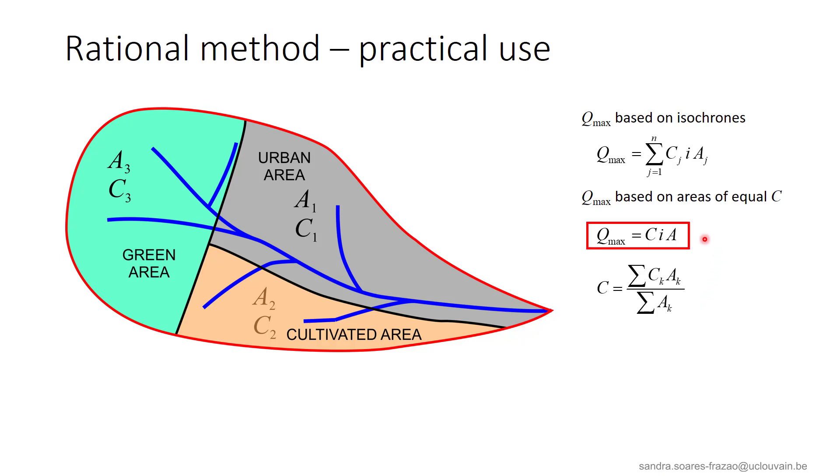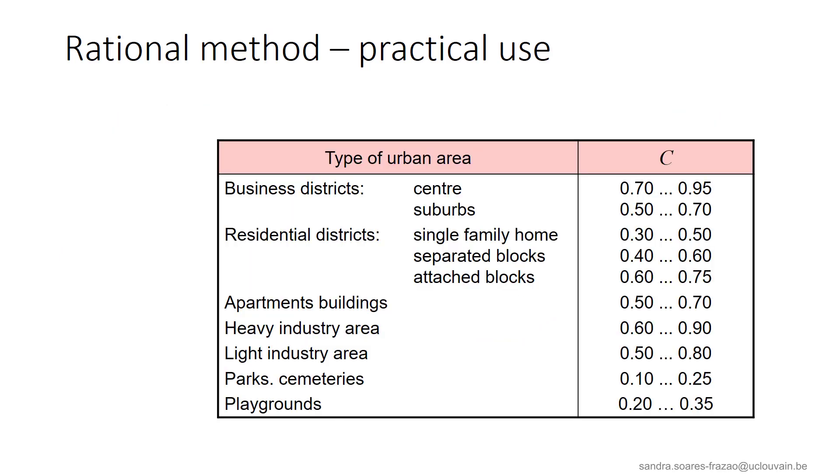In this formula, besides C, we have I, that is the rain intensity. Its value can be found in IDF curves, for example, and A, that is the total area of the catchment. Here are some examples of runoff coefficients for different types of urban areas. We see that for relatively impervious areas, such as business districts or industrial areas, the runoff coefficient can be very high, here and here, close to 1. This means that almost no infiltration will occur, and there will thus be no delay in the runoff. On the opposite, green areas, like parks or playgrounds, have much smaller runoff coefficients. Such areas allow to delay the flow propagation after a rainfall event, and in this way reduce the discharge that will have to be collected in the drainage system.